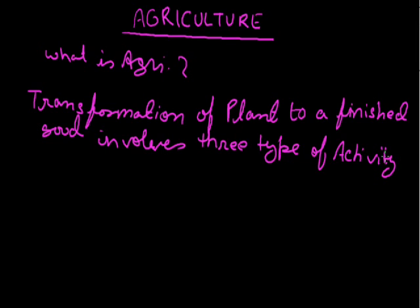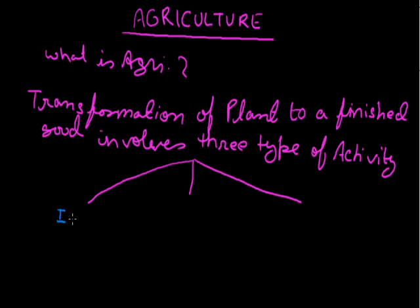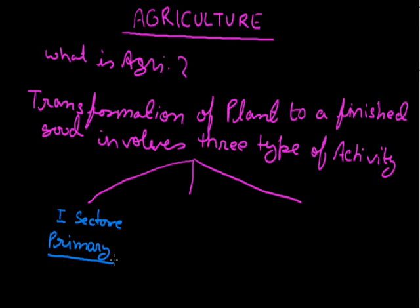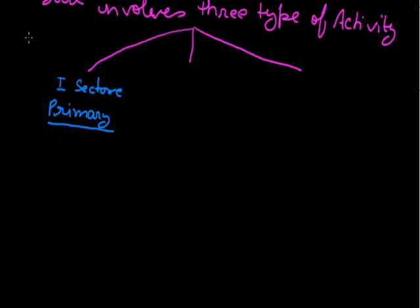If you see where human beings are engaged, they are engaged in three different types of activities. The first is called the first sector, or you can say the primary sector. By name it is clear that in the primary sector, human beings are doing works which are directly linked with nature.